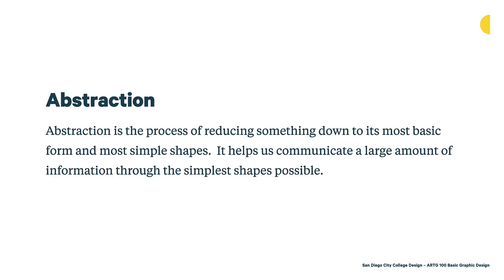Abstraction is the process of reducing something down to its most basic form and simple shapes. It helps us communicate a large amount of information through the simplest shapes possible. Abstraction is similar to simplification in that we are simplifying, but abstraction actually changes the way that an object is rendered to aid in that simplification process. So they're related, but they're not quite the same thing, and we'll look at some examples.